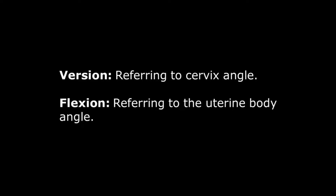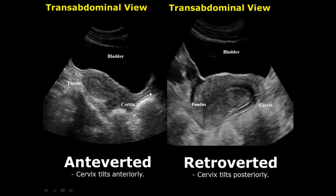When the term version is used, it refers to the angle of the cervix, and when the term flexion is used, it refers to the angle of the uterine body. The first image is the anteverted uterus — it is the most common uterine position in which the cervix faces or tilts anteriorly. There is no bending of the body of the uterus, so we just comment on the cervix.